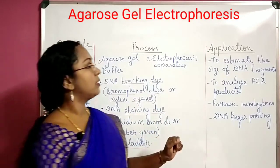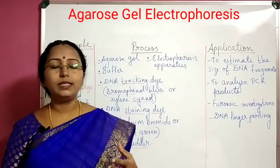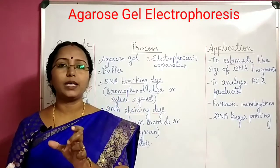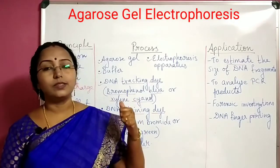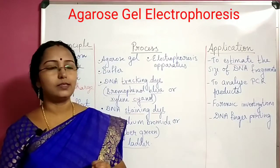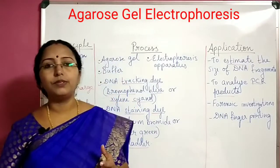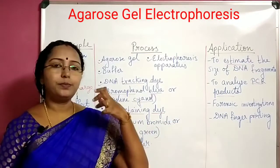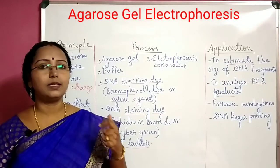Let's move on to the application part. Gel electrophoresis is used to estimate the size of DNA fragments. We have the DNA fragment cut into many pieces, and we don't know how many base pairs each fragment is — we don't know the length. So we can actually find out the length of those fragments using gel electrophoresis. Since it is a separation technique based on size, using this technique we can also find out the size of DNA fragments. It is also used to analyze PCR products — once you have obtained PCR products, this gel electrophoresis is again used to analyze them.